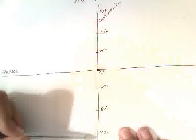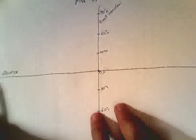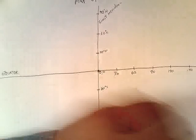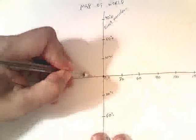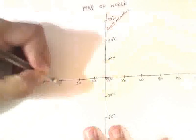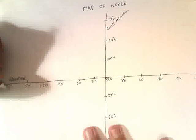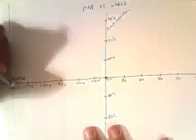Now we need to do the same with East and West. It goes 180 degrees in each direction, so we go up in 30s: 30, 60, 90, 120, 150, 180 for the East side, and the same for the West side — 30, 60, 90, 120, 150, 180. All of the left side values are West, and all of the right side values are East. I know there was a lot of setup, but you only have to do it once, and you can do as many questions as you want on this one piece of paper.